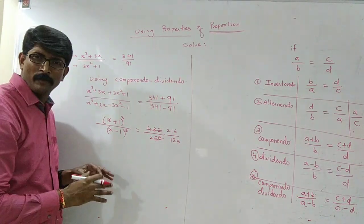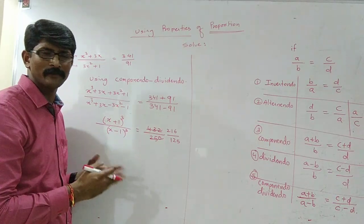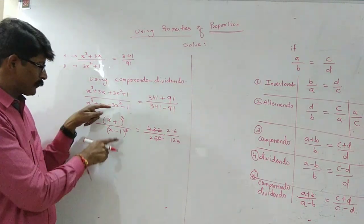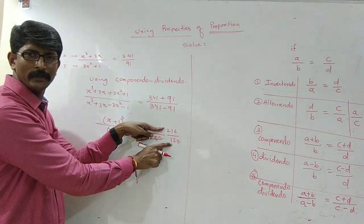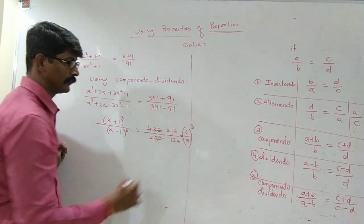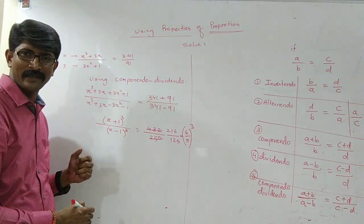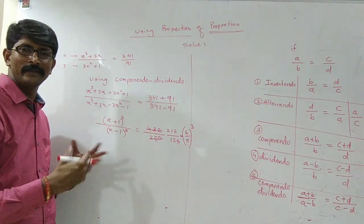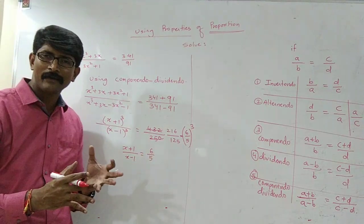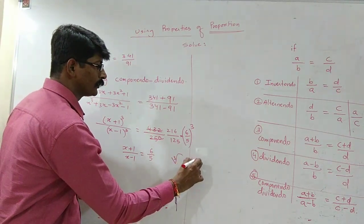You can stop and rewind the video if I'm going too fast. Now, since the power is 3 on both sides, we need to make sure the right-hand side is also a power of 3 — so 216 is 6³ and 125 is 5³. Whenever the powers are the same, by index rules, we take the cube root on both sides, giving x plus 1 upon x minus 1 equals 6 upon 5.